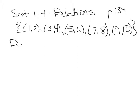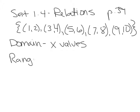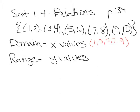The domain of a relation refers to all the x values. The range of a relation refers to all the y values. So for example, in the relation written above, the domain would be the set of all the x values. So the domain of this relation is 1, 3, 5, 7, 9 — that's the domain of this relation.